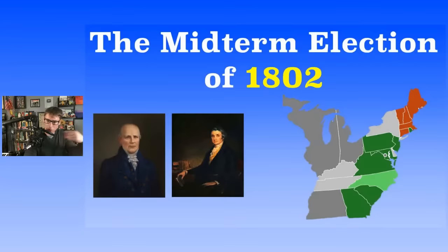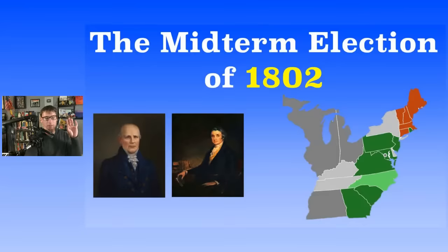It wasn't all three branches of government, though — because the Supreme Court and district courts were mostly Federalists still. When we say trifecta, we're talking about the president, the House, and the Senate. That's the first time we saw this, really, since George Washington.